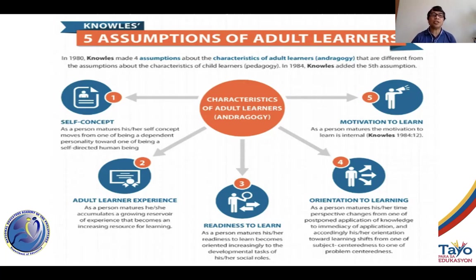The first assumption has something to do with self-concept. This assumption tells us that as a person grows and matures, he becomes more independent and more self-directed as a human being, making decisions independently using his experience. The second assumption, with respect to adult learning experience, assumes that an adult has a wealth of experience and maybe even wisdom.